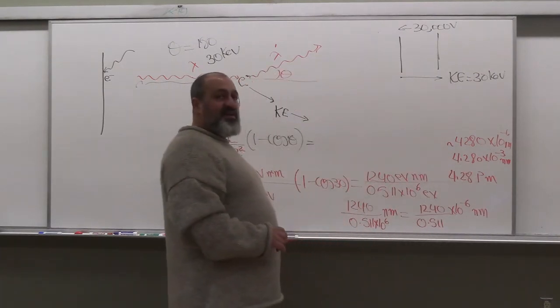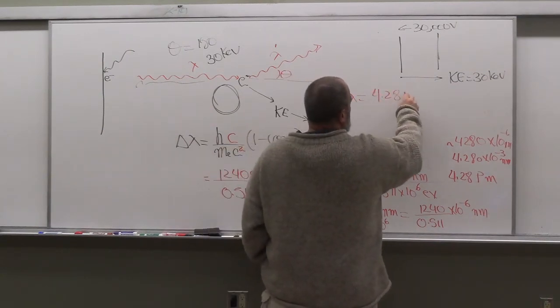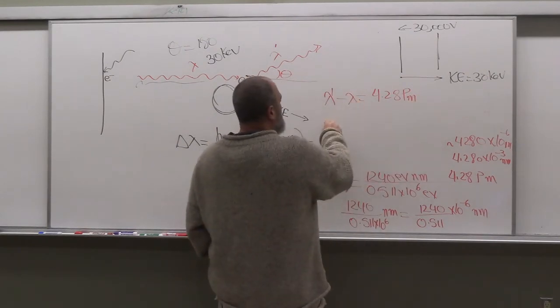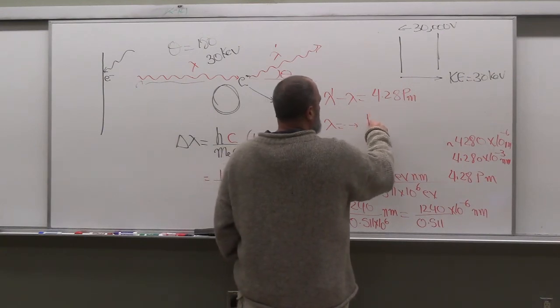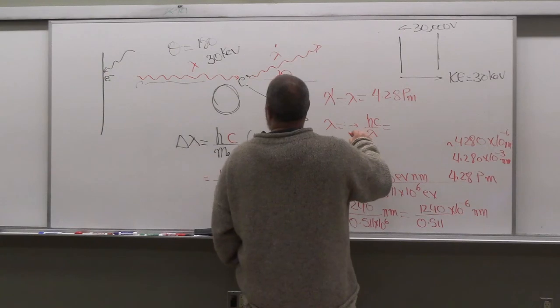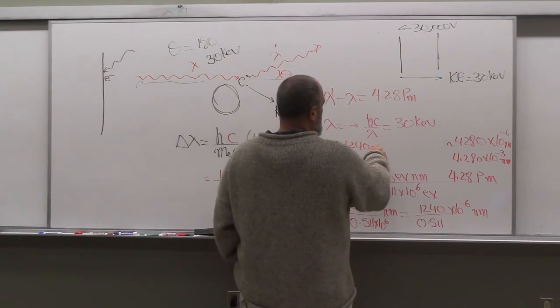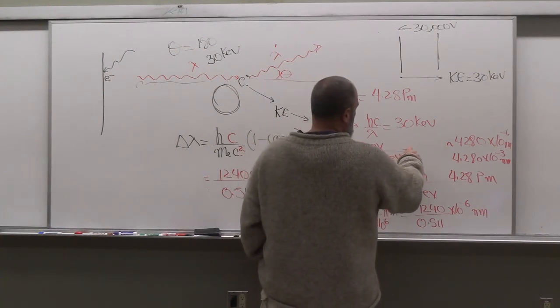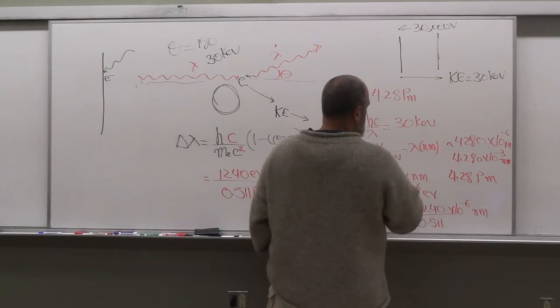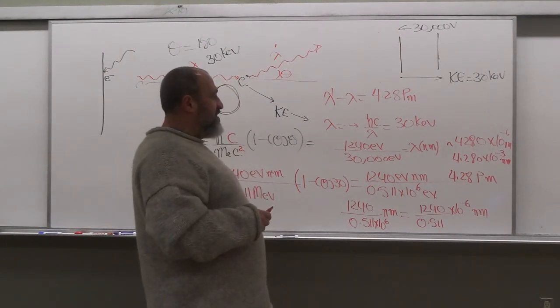So how do you calculate the new wavelength? Well, you say lambda prime minus lambda is equal to 4.28 picometers. And how do you find lambda? Well, lambda is equal to what? Keep in mind that for lambda, we have hc over lambda is equal to 30 keV. So hc is 1240 eV nanometers divided by 30,000 eV will give you lambda and that is in nanometers. It will be some number you can use.